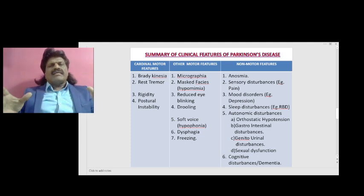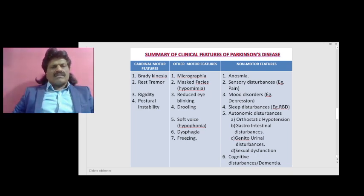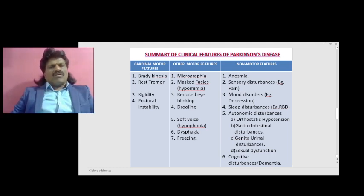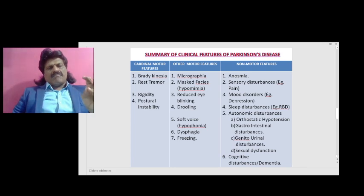Summarizing the clinical features of Parkinson's disease, we can categorize them into three compartments. The cardinal motor features are bradykinesia, rest tremor, rigidity, and postural instability — remembered by the acronym TRAP: T for tremor, R for rigidity, A for akinesia, P for postural instability.